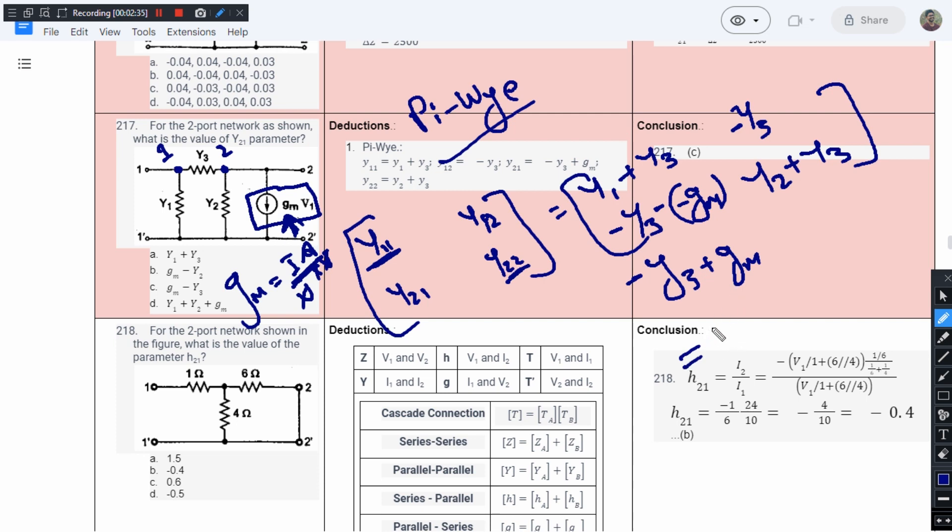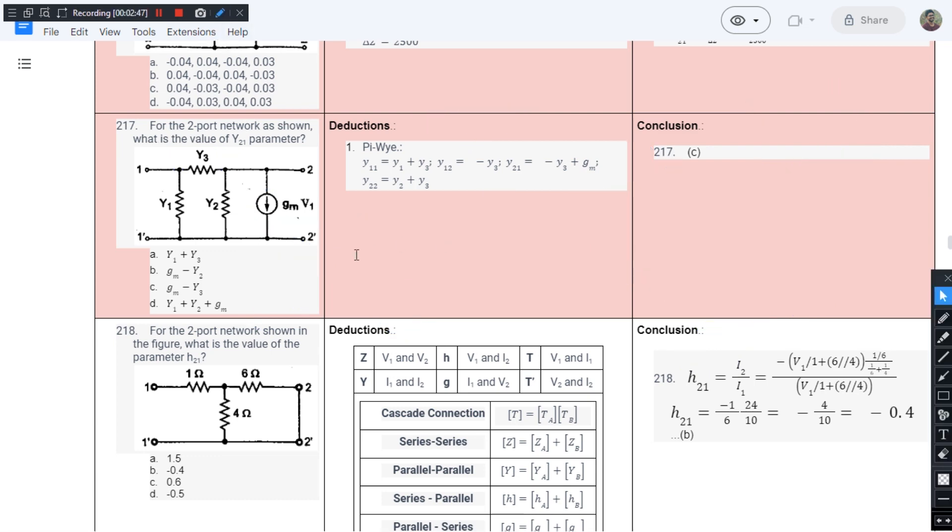This can be rewritten as gm minus Y3. So we have gm minus Y3 in option C. This is the right answer for this question. As I have told you, to deeply understand the shortcut of this question, you need to do your homework.